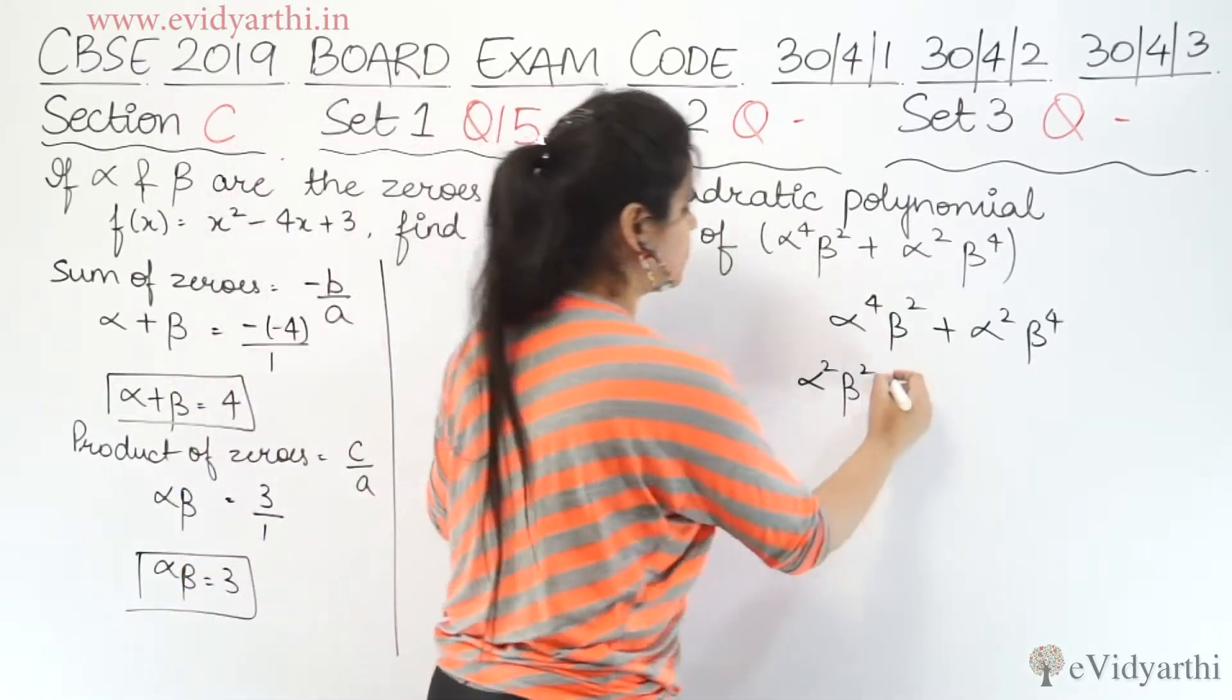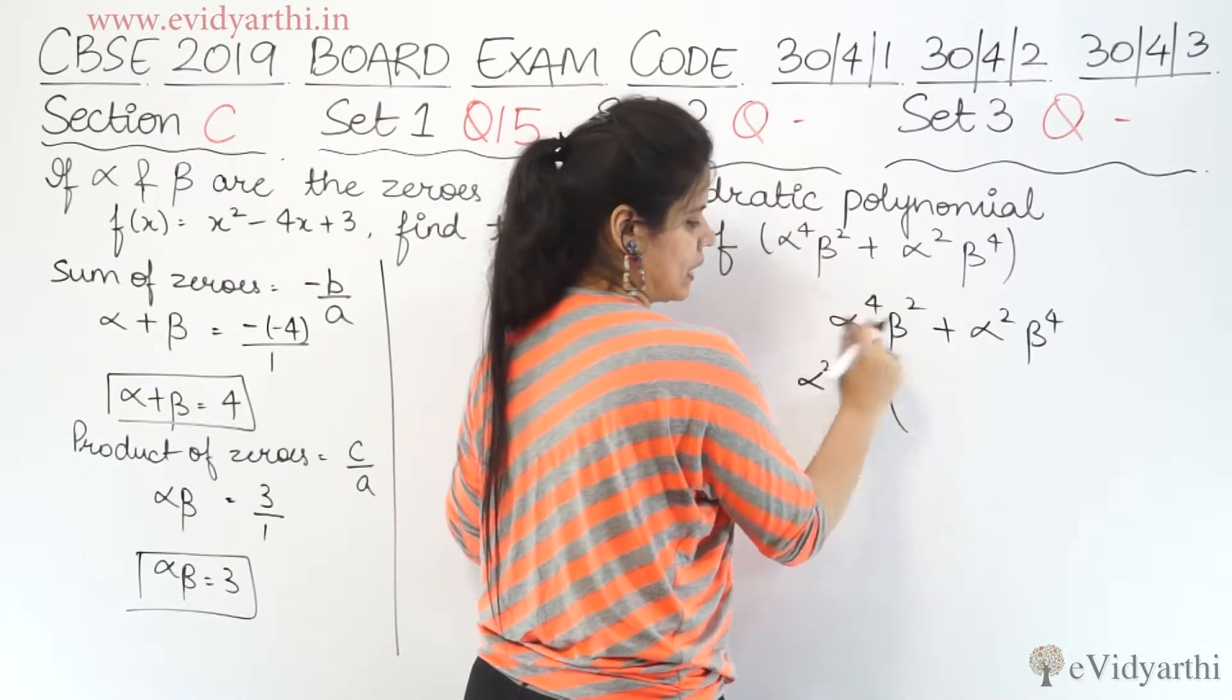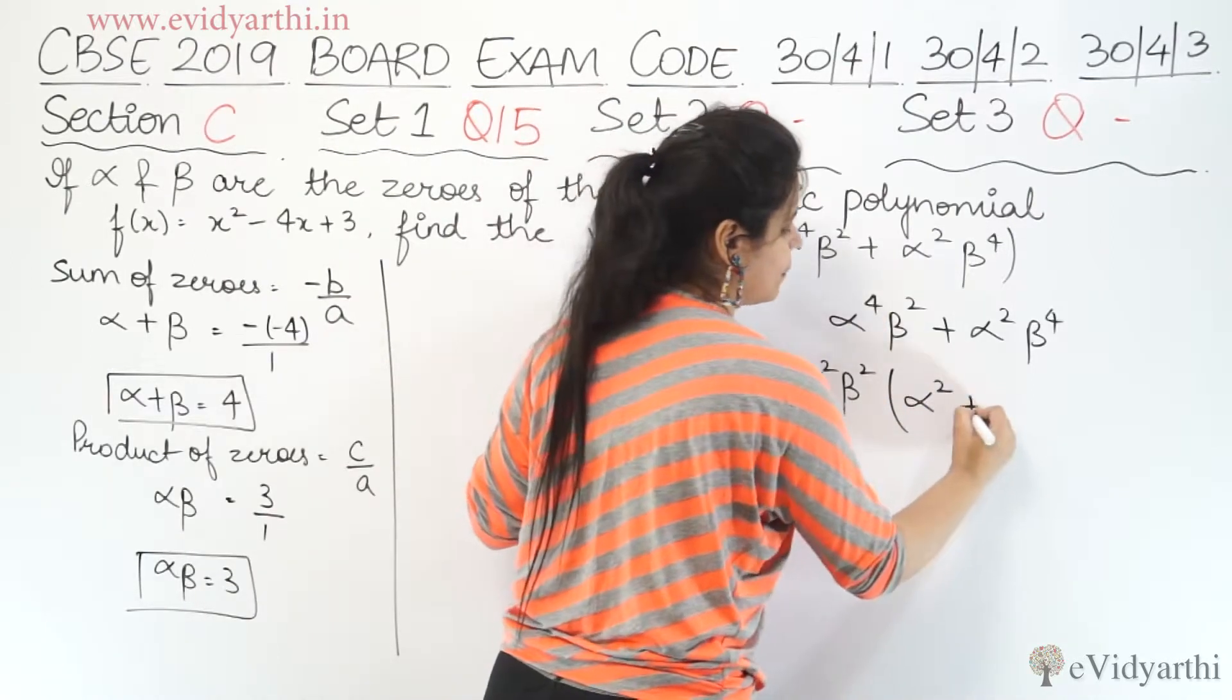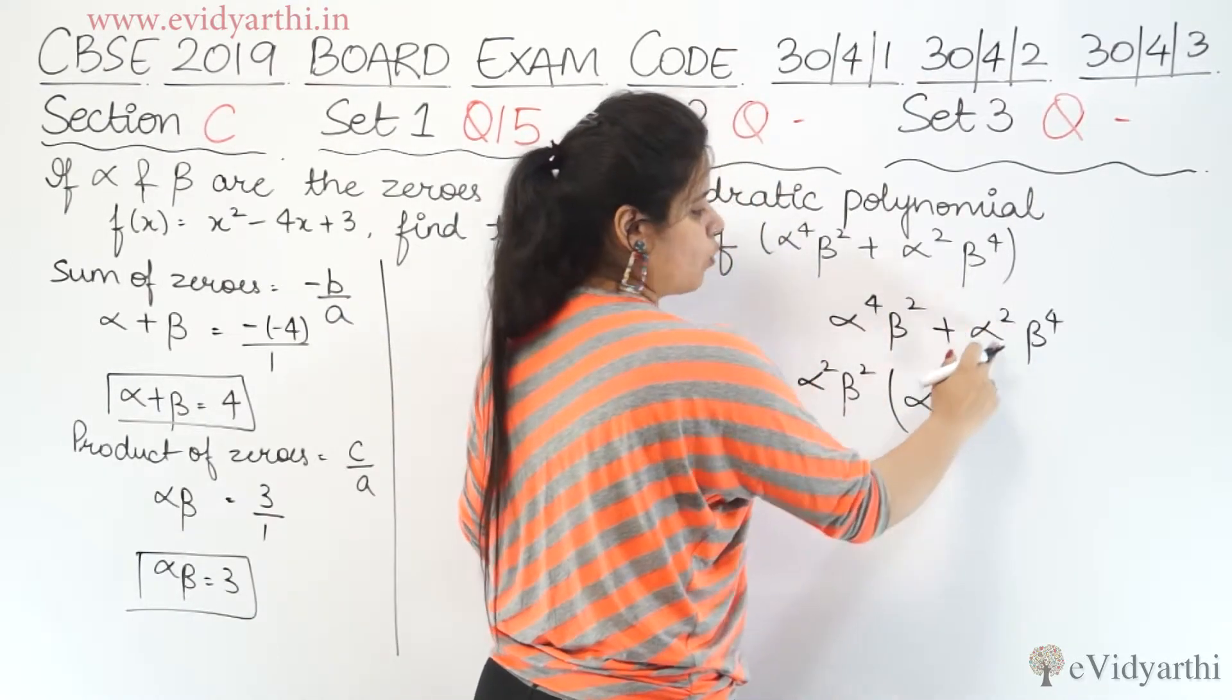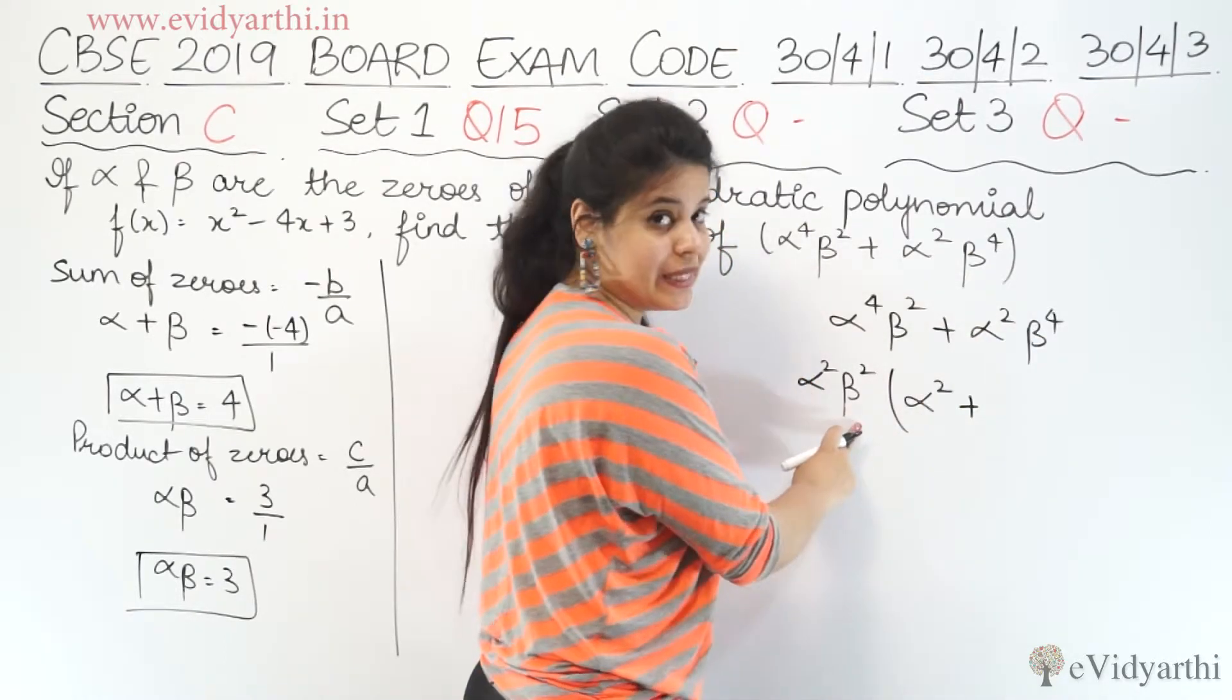If you look here, alpha square is common. So here alpha square and beta square are common, plus alpha square. Here alpha square is common, then beta square is common.